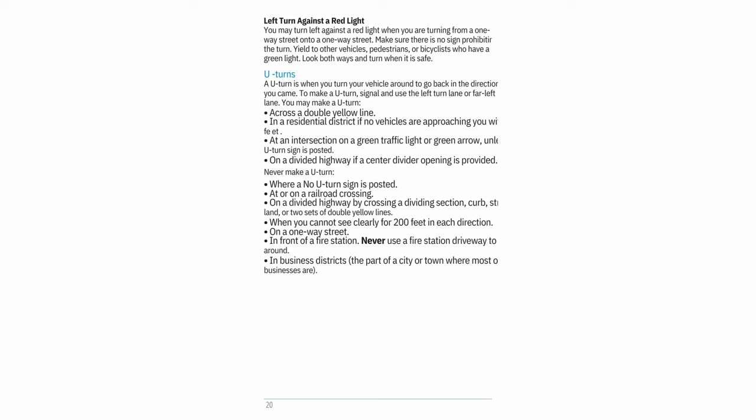U-turns: A U-turn is when you turn your vehicle around to go back in the direction you came. To make a U-turn, signal and use the left-turn lane or far-left lane. You may make a U-turn: across a double yellow line; in a residential district if no vehicles are approaching within 200 feet; at an intersection on a green traffic light or green arrow, unless a no-U-turn sign is posted; or on a divided highway if a center divider opening is provided.